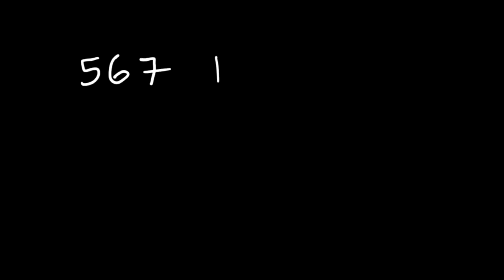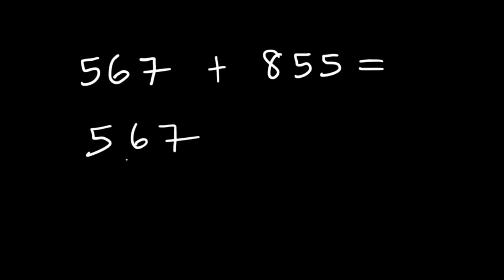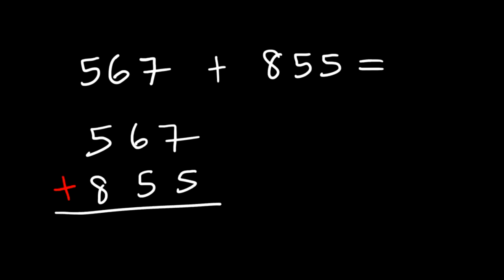Let's try one more example: 567 plus 855. 5 plus 7 is 12 — carry over the 1. 1 plus 6 is 7, and 7 plus 5 is 12 — carry over the 1. 1 plus 5 is 8, and 6 plus 8 is 14. So 567 plus 855 is 1422.